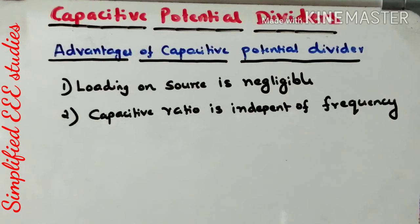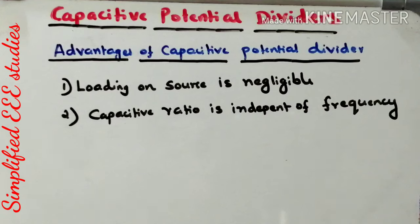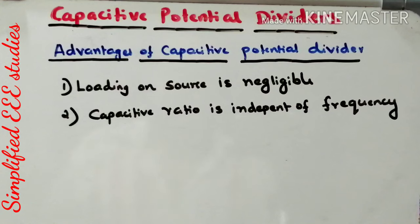Moreover, the result will be accurate — that is another advantage. Now, regarding the drawbacks: the first and foremost is that the selection of the high voltage capacitor is difficult. That is the main drawback. Moreover, stray loss will be present because of the connecting leads. Stray capacitance will be influenced, which may cause more errors. These are the main drawbacks of Capacitive Potential Divider.